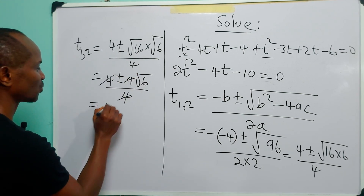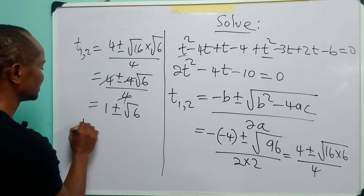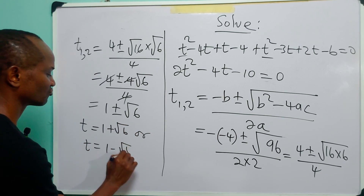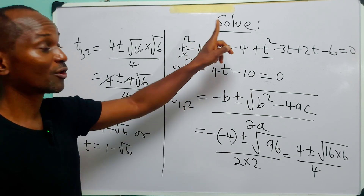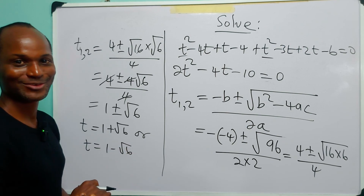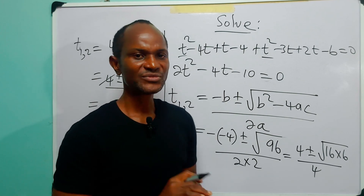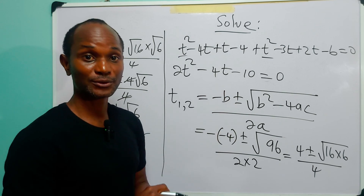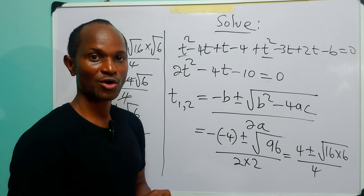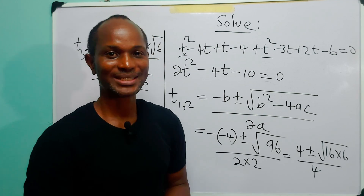Simplifying, t = 1 ± √6. So the two values are t = 1 + √6 or t = 1 - √6. These are the values of t that solve the original equation. With that we come to the end of today's lesson. You've learned how to combine two fractions into one unit and how to check whether a quadratic equation can be factorized. If you know anyone who needs such lessons, go ahead and share. See you in the next lesson.